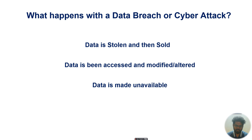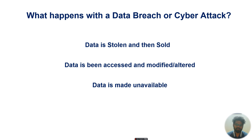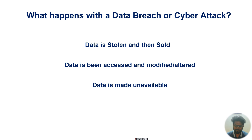The third thing is data is made unavailable. These are the three major things that happen because of a cyber attack. For example, if Flipkart's website goes completely down — even for just five minutes — they would have a loss we can't imagine, possibly in lakhs, crores, or billions, especially during their Big Billion sales. So data is made unavailable, modified, or stolen — these are the three outcomes of a cyber attack.